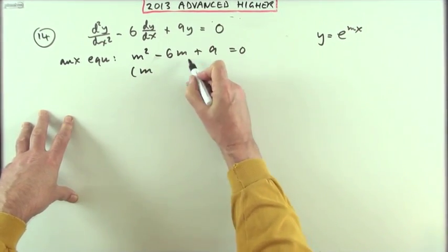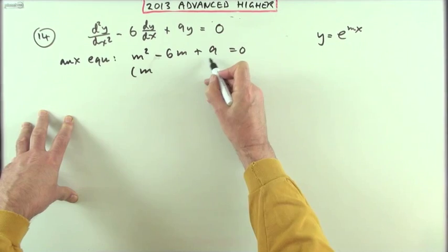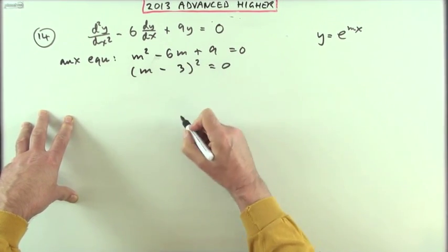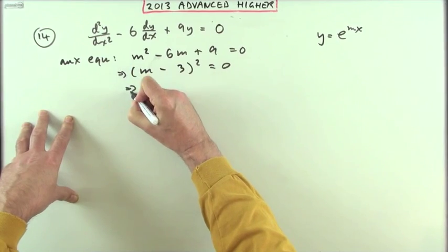Solving that, that's a square because I've got three threes and that makes a six. So m - 3 squared, which unfortunately gives me just one answer, m = 3.